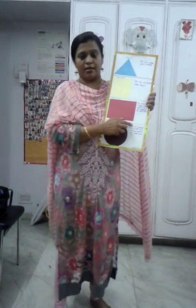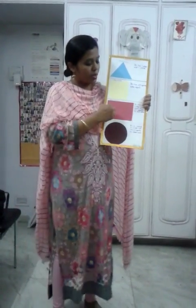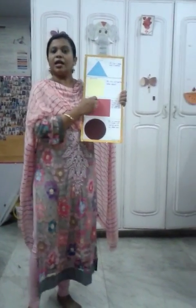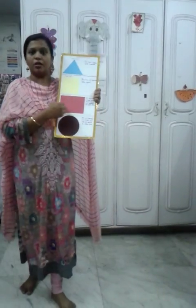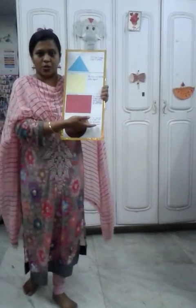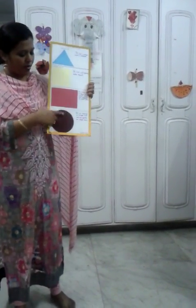Then we move to a rectangle. A rectangle has any two opposite sides that are equal. You can see the opposite sides also. It is red in color.